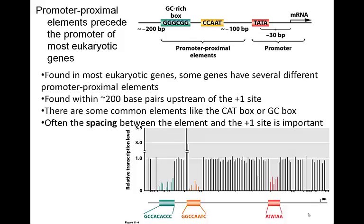Promoter proximal elements are found within a short distance of the promoter — usually within several hundred bases before the TATA box. Two commonly found examples are the GC box and the CAT box. Proteins bind to these sequences and are important in activating transcription. If you mutate the TATA box, you lose transcription, and similarly, mutating the CAT and GC boxes also causes loss of high transcription levels.